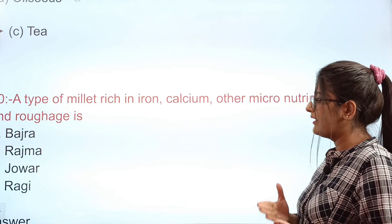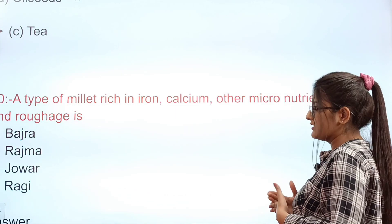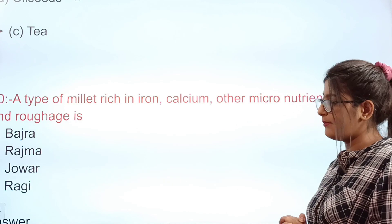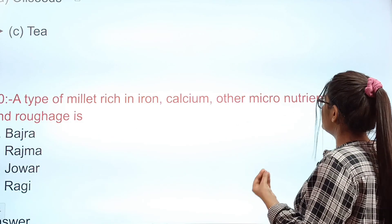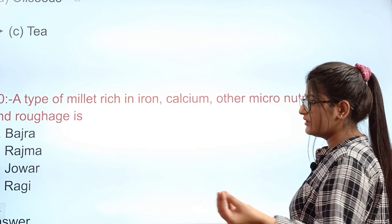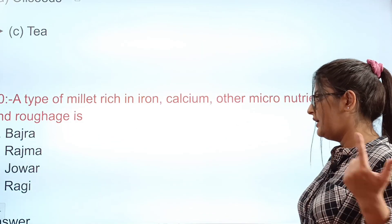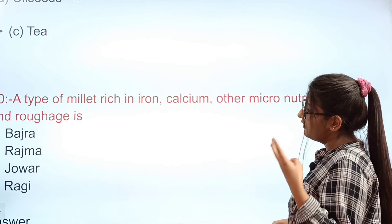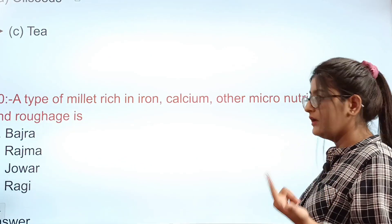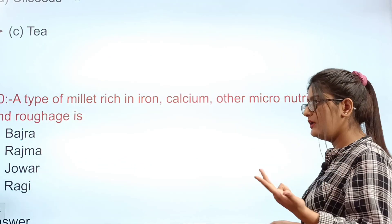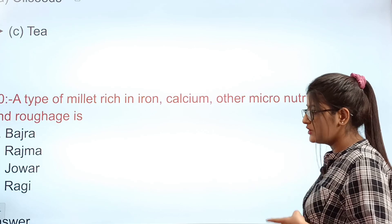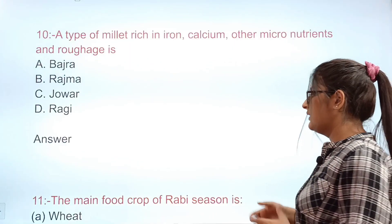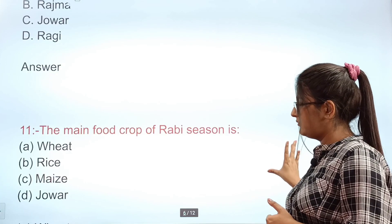Question: A type of millet rich in iron, calcium, and other micronutrients and roughage is known as what? Options: A bajra, B rajma, C jowar, D ragi. The correct answer is D — ragi.